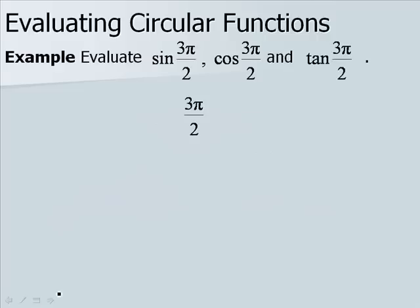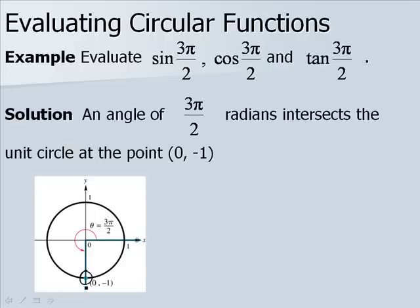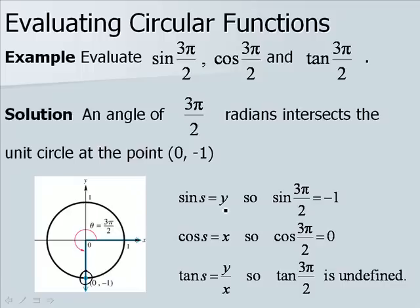Let's evaluate the sine, cosine, and tangent of 3π/2. The angle 3π/2 radians intersects the unit circle at the point (0, −1). Since sine of s equals y, the sine of 3π/2 is −1. Since cosine of s equals x, and x is 0, the cosine of 3π/2 is 0. The tangent of s is y over x, so tangent of 3π/2 would be −1 over 0, which is undefined. Evaluating a circular function at 3π/2 is equivalent to evaluating it at 3π/2 radians.